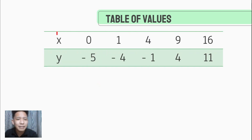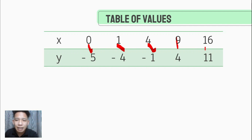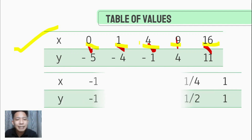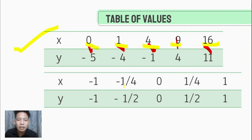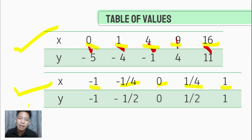Let's have some examples. The correspondence of X and Y where X takes values 0, 1, 4, 9, and 16, each corresponding to a certain value of Y. Does this table of values represent a function? Yes, because none of the X values repeat. Next, we have X values -1, -1, 4, 0, 1, 4, and 1 — wait, looking at the X values, none of them repeat, so this table of values also represents a function.